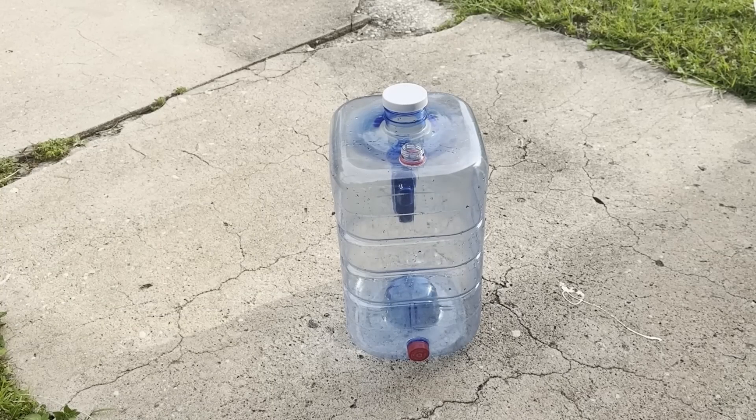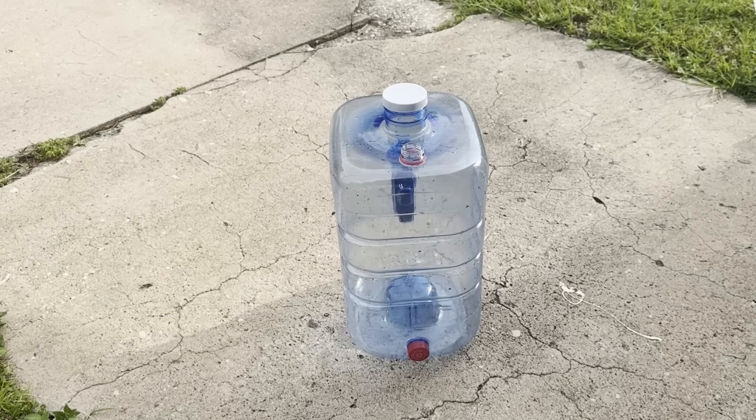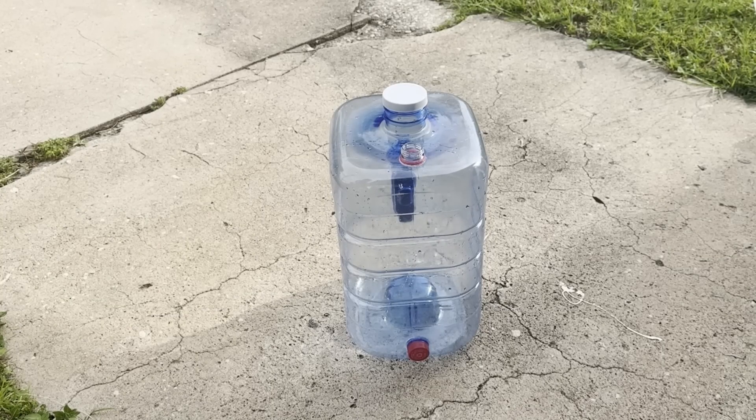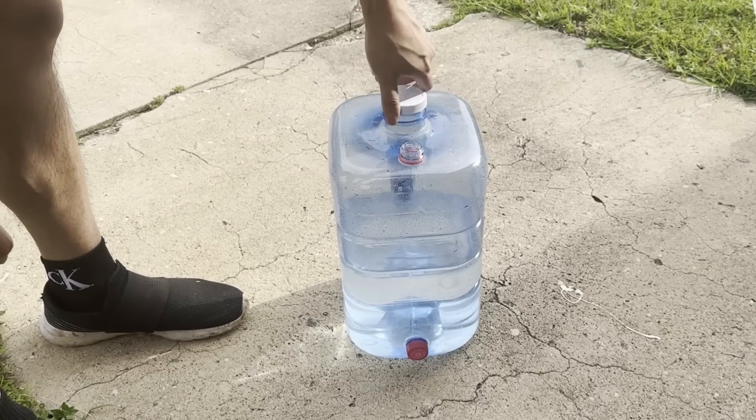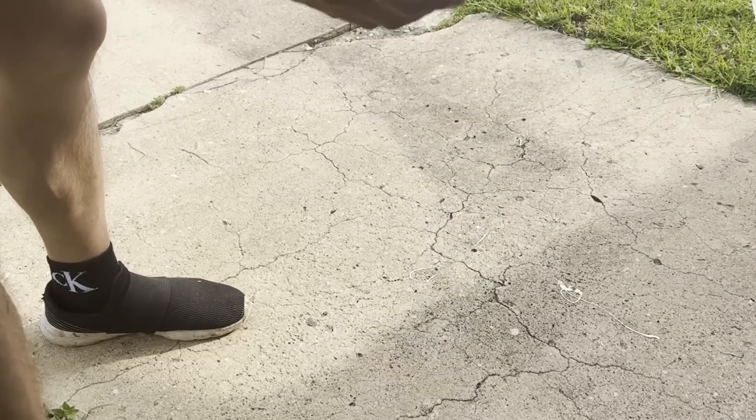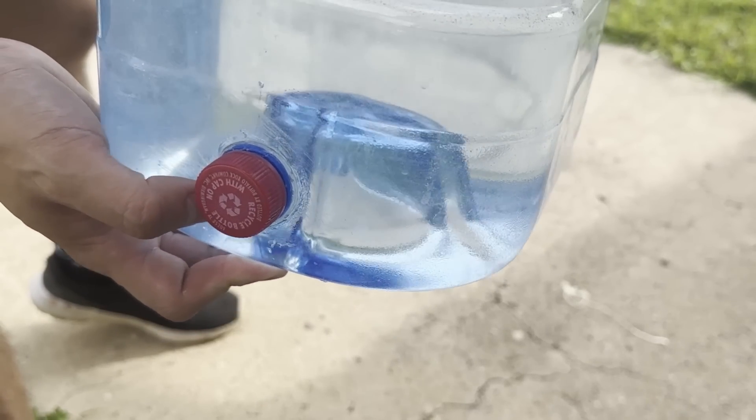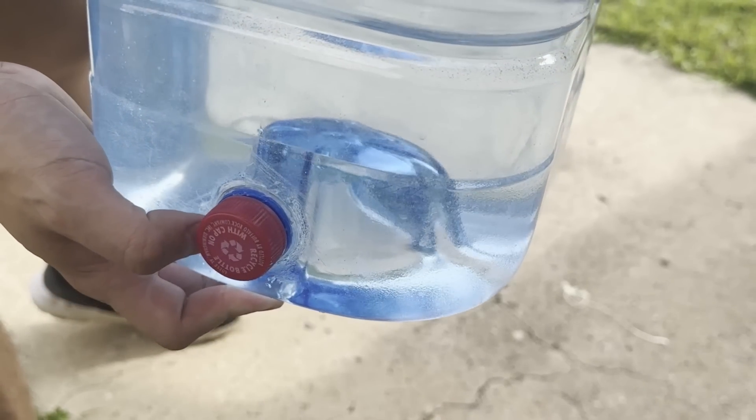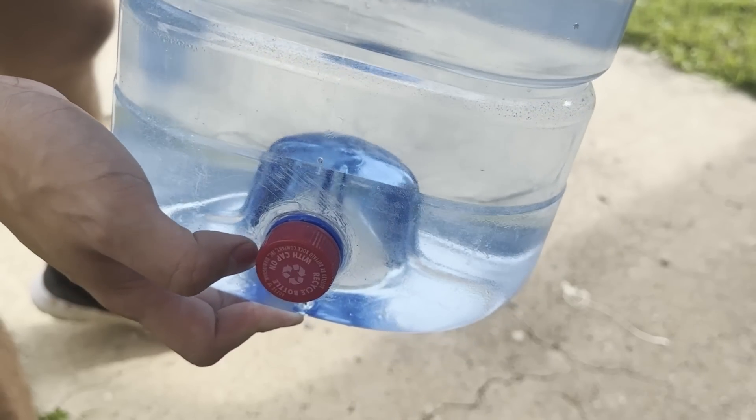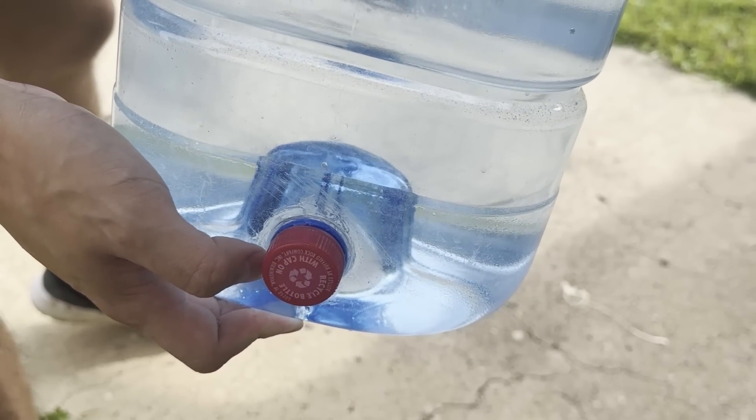Once you've let the silicone cure for 24 hours, you can now fill the jug up with water. It's a good idea to inspect the seal carefully to make sure that there is no leak. This is important because if the air gets inside the jug, your station will overflow with water.